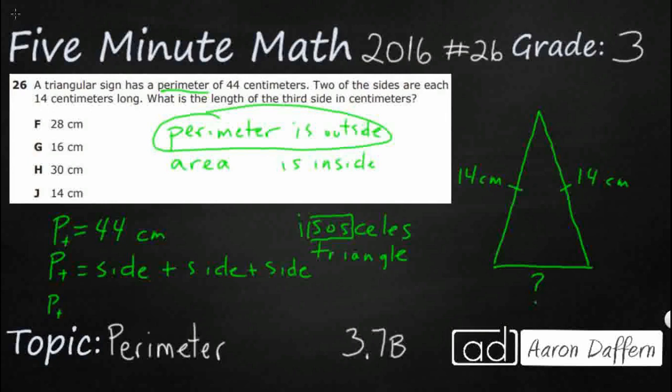So perimeter of a triangle here is 14 cm, that's one side, plus 14 cm plus this question mark. That's what we're trying to figure out. Let's see if we can figure out what is 14 and 14. 14 and 14 is 28.